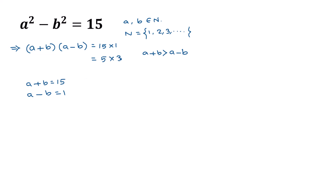For the second factor pair, since 5 > 3, we get a + b = 5 and a − b = 3. For the first combination, adding the two equations gives 2a = 15 + 1 = 16, with the b terms cancelling.